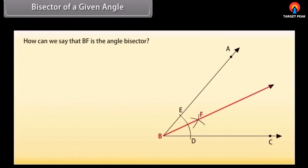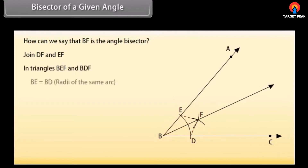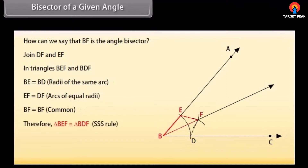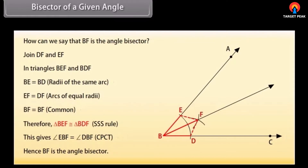Now draw the ray BF. This ray BF is the required bisector of angle ABC. To prove this, join DF and EF. In triangles BEF and BDF: BE equals BD (radii of the same arc); EF equals DF (arcs of equal radii); BF equals BF (common). Therefore by SSS congruence rule, triangle BEF is congruent to triangle BDF, giving angle EBF equals angle DBF by CPCT. Hence BF is the angle bisector.